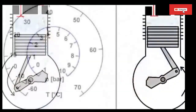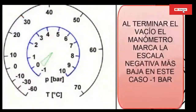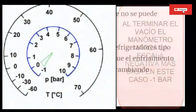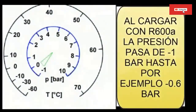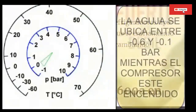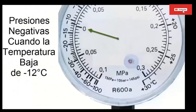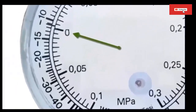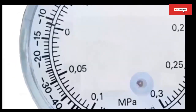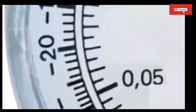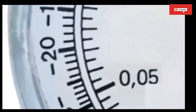In this case, the manometer will mark its lowest scale value, that is, the most negative value it has — for example, minus one bar. Now if we introduce RSI X-100A into the system, part of the negative value will be lost because now there is the pressure exerted by RSI X-100A. As it is difficult to have a precise measurement for such small pressure values, it is highly recommended to work with RSI X-100A only with special manometers for this gas.